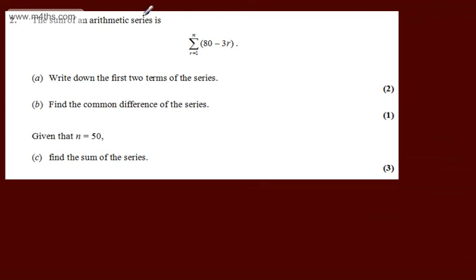In question 2, we're told the sum of an arithmetic series is the sum from r equals 1 to n of 80 minus 3r.